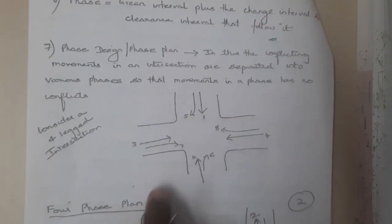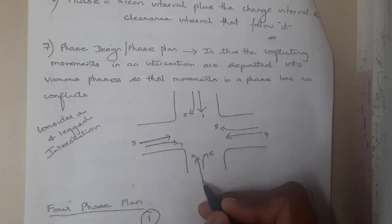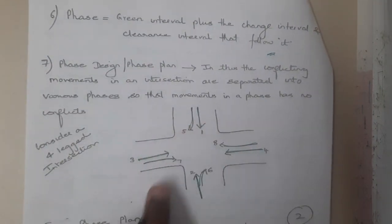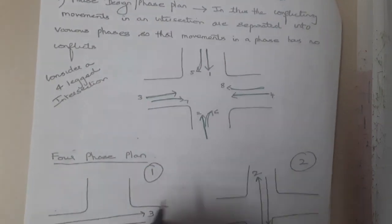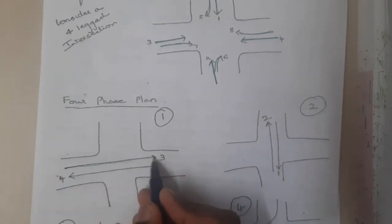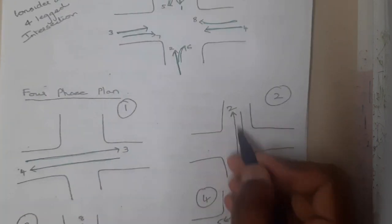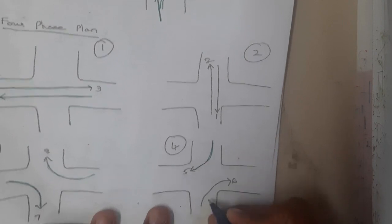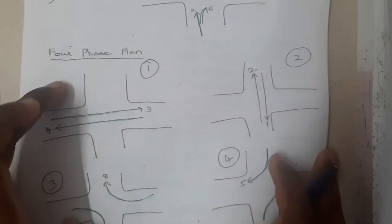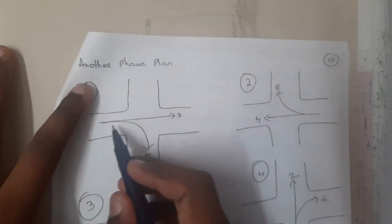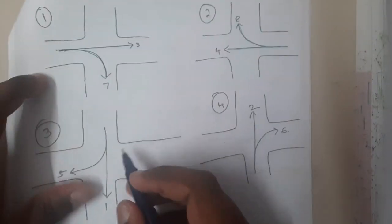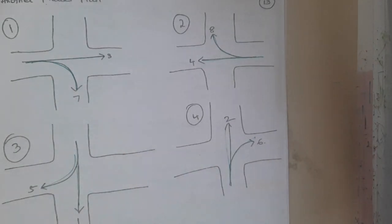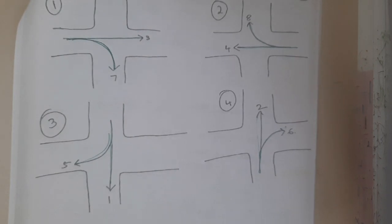For example, we consider movements numbered one through eight at an intersection — some vehicles going straight, some turning. In a phase plan, some members go in one direction and others in the opposite direction with no interaction or collisions between them. We draw all possible movement combinations, and based on those combinations we analyze the situation, then create the signal timings accordingly.